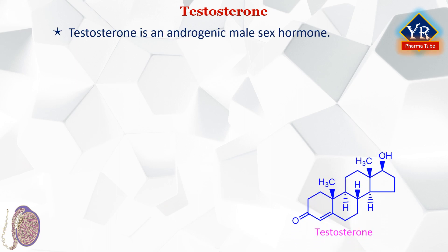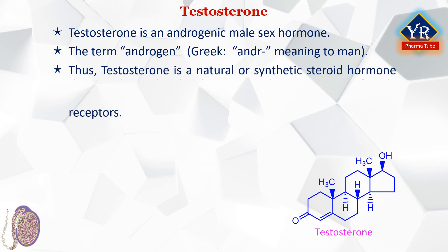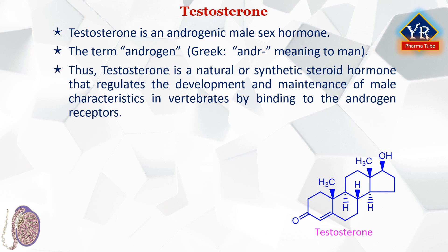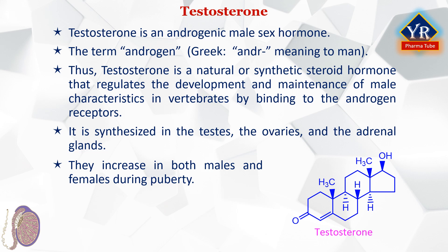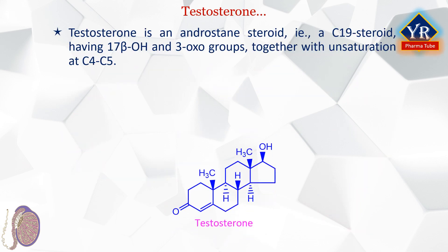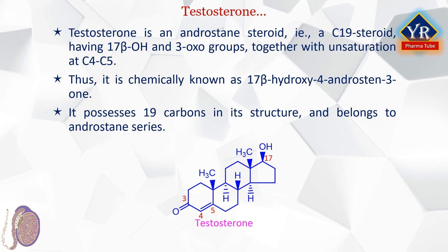Testosterone is an androgenic male sex hormone. The term androgen has come from Greek stem word 'andro' meaning man. Thus, testosterone is a natural or synthetic steroid hormone that regulates the development and maintenance of male characteristics in vertebrates by binding to the androgen receptors. It is synthesized in the testis, the ovaries, and in the adrenal glands. They increase in both males and females during puberty. Testosterone is an androstane steroid, that is a C19 steroid, meaning a 19-carbon containing steroid, having 17-beta hydroxy and 3-oxo groups together with unsaturation, that is a double bond at C4 and C5. Thus, it is chemically known as 17-beta-hydroxy-4-androstane-3-one. As it possesses 19 carbons in its structure, it belongs to the androstane series.